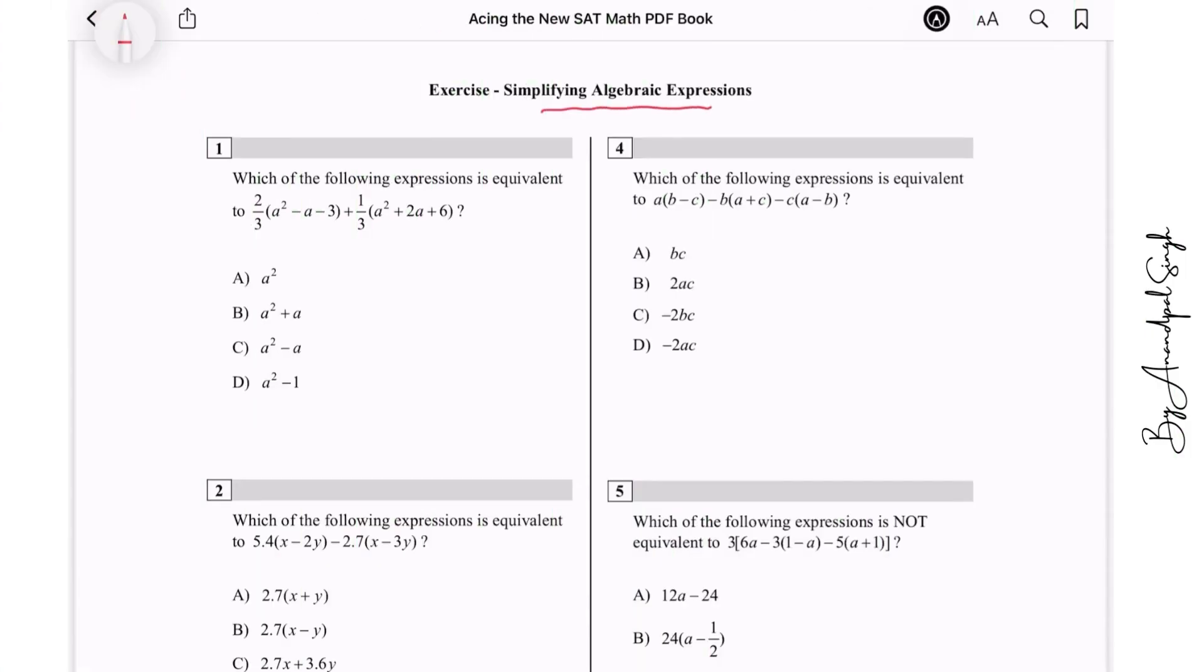Which of the following expression is equivalent to 2/3(a² - a - 3) + 1/2(1/3a² + 2a + 6)? So what we do first of all, we observe that this is 2/3 of a² and this is 1/3 of a².